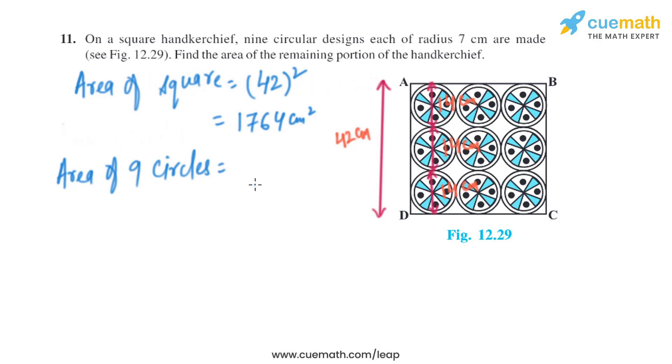Now let's find the area of nine circles. We know the formula to find the area of a circle, that is πr². As there are nine circles, it will be 9 multiplied by πr², which is 9 into 22 by 7 multiplied by the radius of the circle, which is 7 squared. On solving this we will get the area of nine circles as 1386 square centimeters.